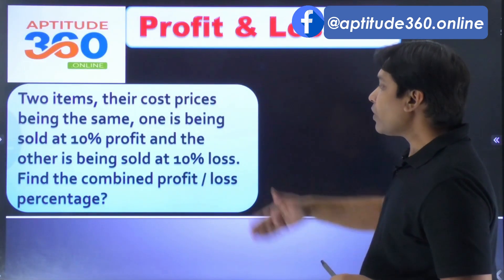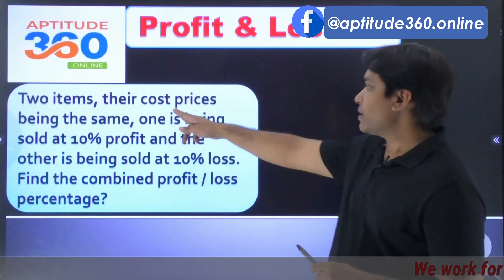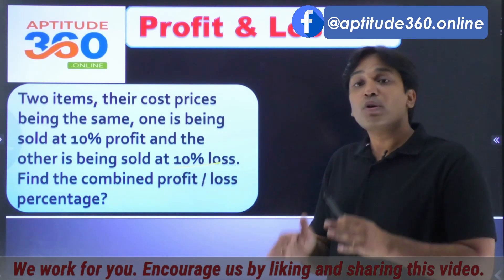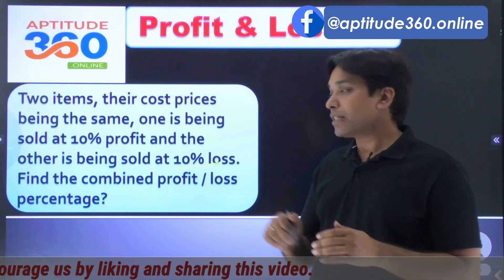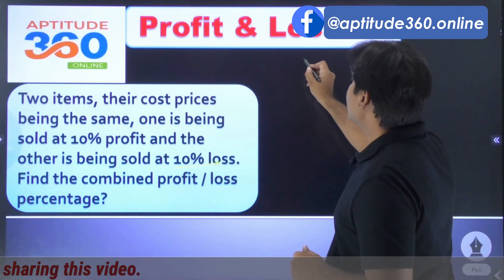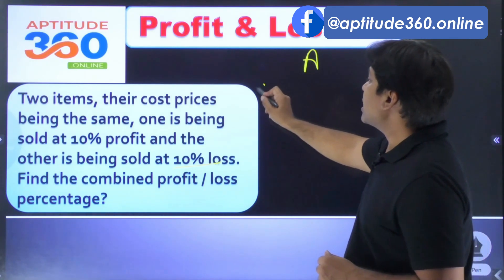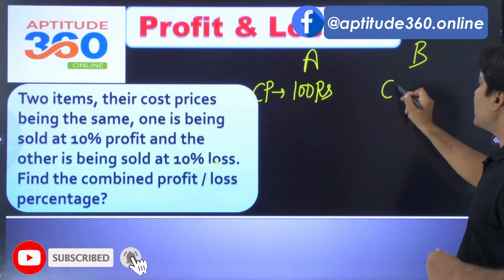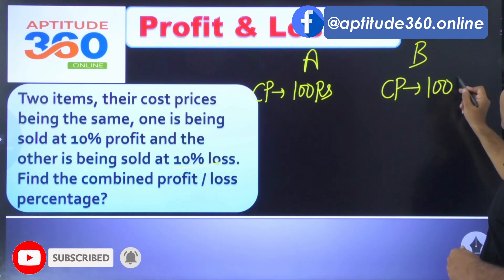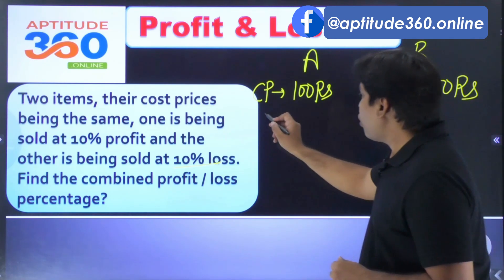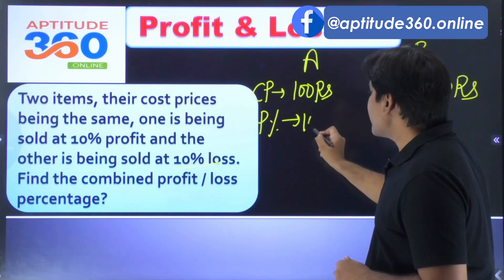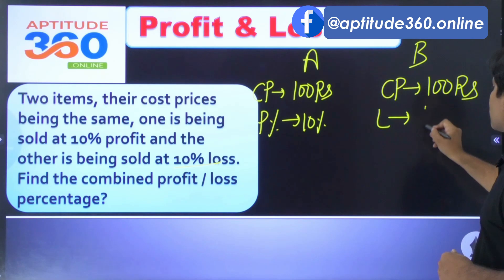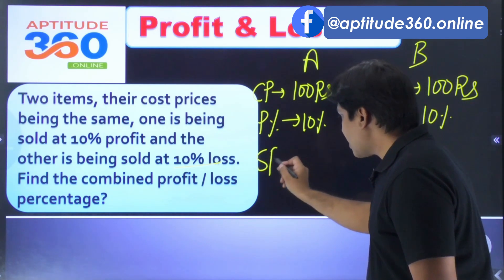Let us get started. We are given this kind of problem: two items, their cost price is the same, one is being sold at 10% profit and the other is being sold at 10% loss. What is going to be the combined loss or profit percentage? Let us try to solve this. Item A and item B both have a CP of 100 rupees, with profit percentage of 10% and loss percentage of 10% respectively.